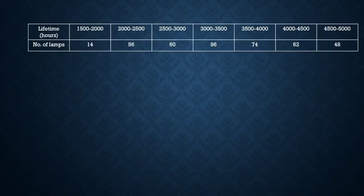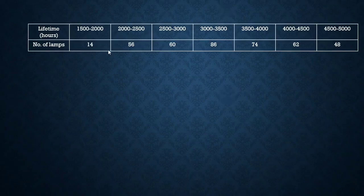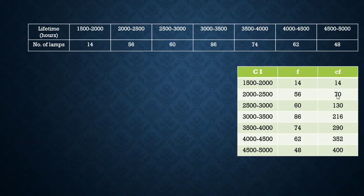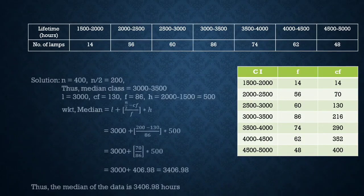In Question 5, we have the distribution of lifetimes of 400 neon lamps and need to find the median lifetime. The class intervals are 1500–2000, 2000–2500, and so on. Computing cumulative frequencies: 14, 70, 130, 216, 290, 352, 400. With n = 400, n/2 = 200. The nearest cumulative frequency greater than 200 is 216, making 3000–3500 the median class.